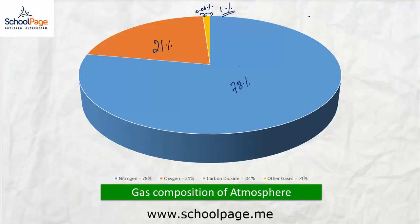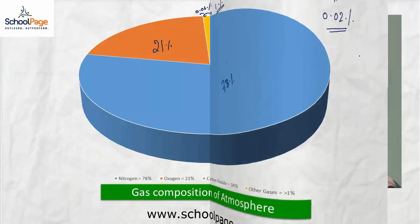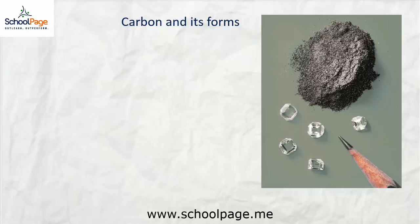The percentage composition of carbon dioxide in the atmosphere is 0.04 percent. In the earth's crust, we find around 0.02 percent of carbon, and that too in the form of compounds. Note that the composition of carbon in the earth's crust and in the atmosphere is very, very negligible.